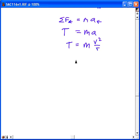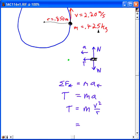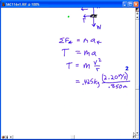And at this point it's just a plug-in. We've got 0.425 kilograms for the mass of the puck. We're given the velocity is 2.20 meters per second, we've got to square that, and the radius of the circle is given as 0.850 meters. Substitute those values into the calculator and evaluate.